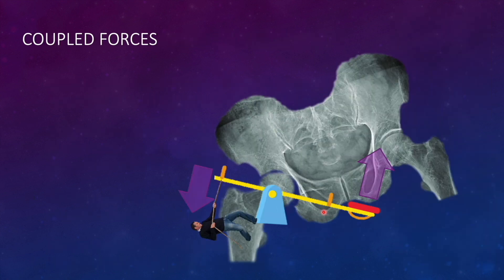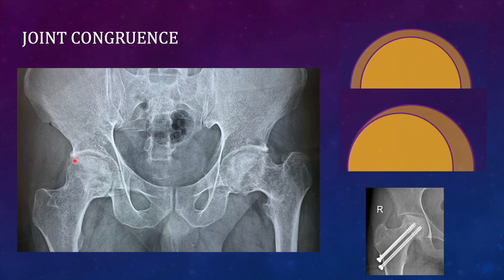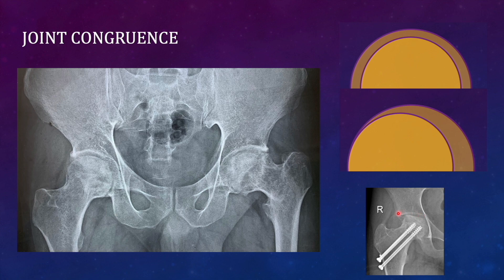Joint congruence relates to the fit of two articular surfaces. If they perfectly match each other, they are congruent. On the right hip joint, the femoral head is perfectly parallel to the articular surface of the acetabulum. On the opposite side, the femoral head is not parallel to the articular surface — the joint congruence is lost. Non-congruent joints have articular surfaces that do not match.